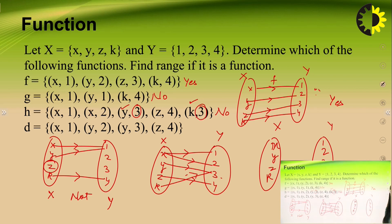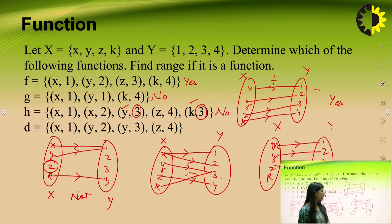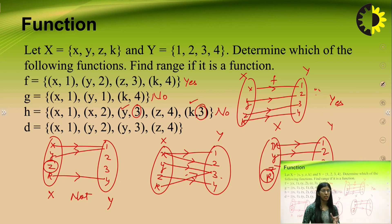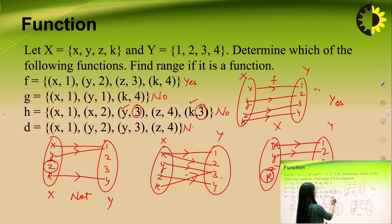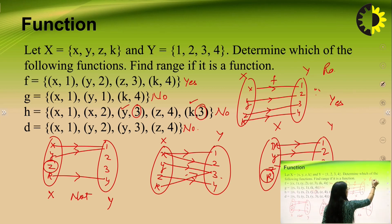In the fourth example, the association is: X is associated with 1, Y is associated with 2, and Z is associated with 4. K is an element of set X that is not associated with any element, so this is not a function. Note that element 3 in the second set has no pre-image, but that is acceptable. What is not acceptable is any element of the first set lacking an association to the second set. The range of the first function (which was a function) consists of all elements that have a pre-image.